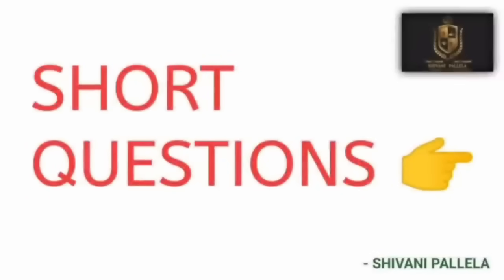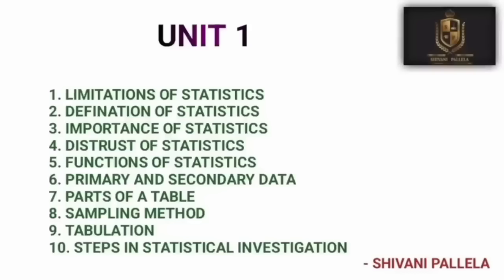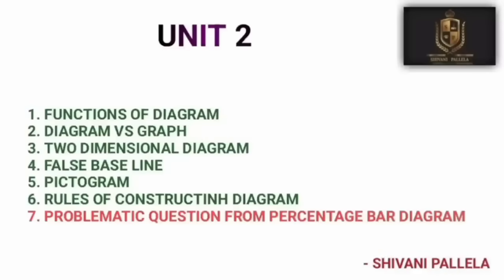First, we will discuss the short important questions helpful for Part A to score 20 marks. For theory answers, write a minimum of one and a half sides. From Unit 1: limitations of statistics, definition of statistics, distrust of statistics, and parts of a table — these four are the most important and repeated questions. Expect at least one of these in Part A.